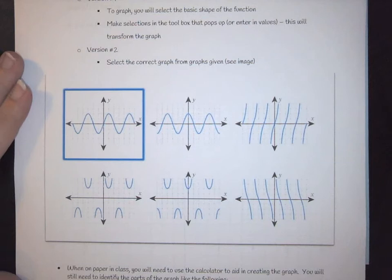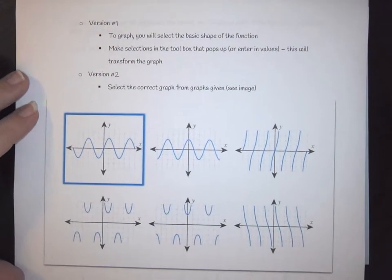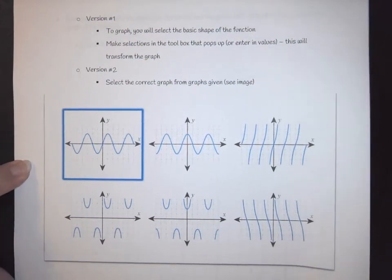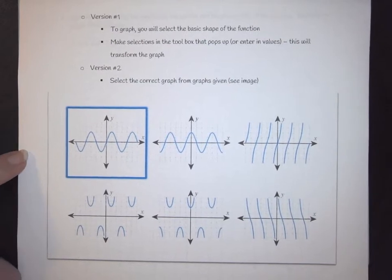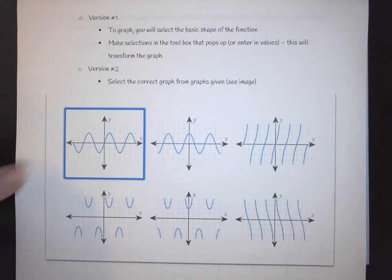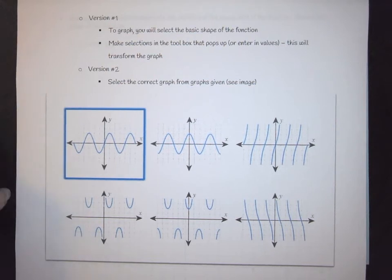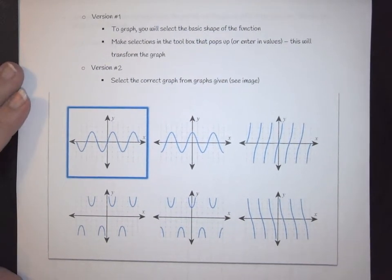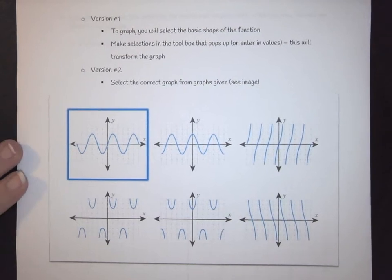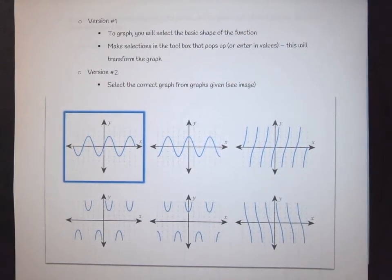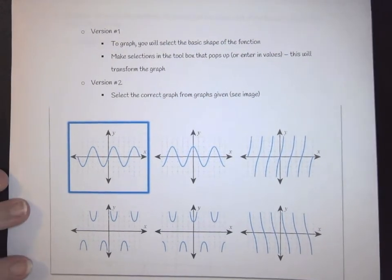If you are working in HAWKS or most computer programs, one of the first things you'll have to do is select the correct graph or starting place from a number of options given. So be aware that you'll often need to do some recognizing right off the bat — knowing where you're starting from and what the graph is supposed to look like.